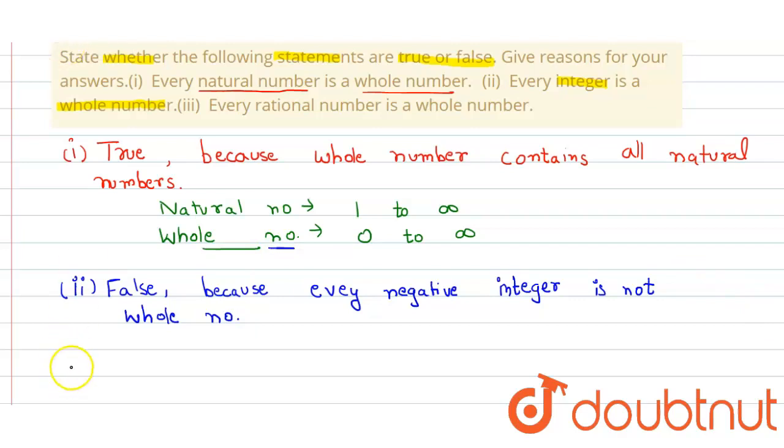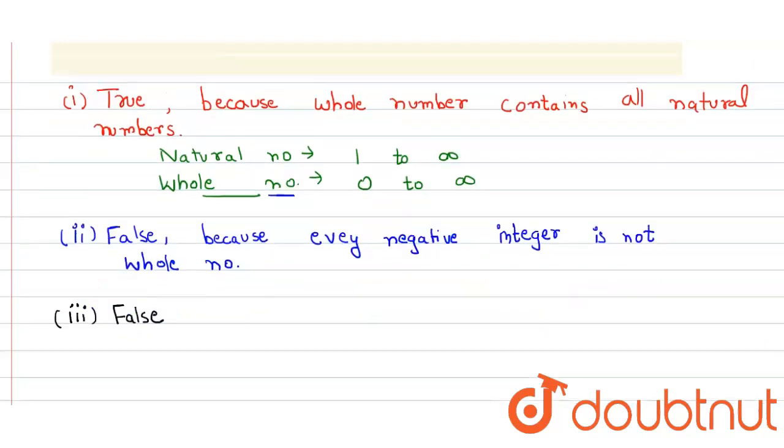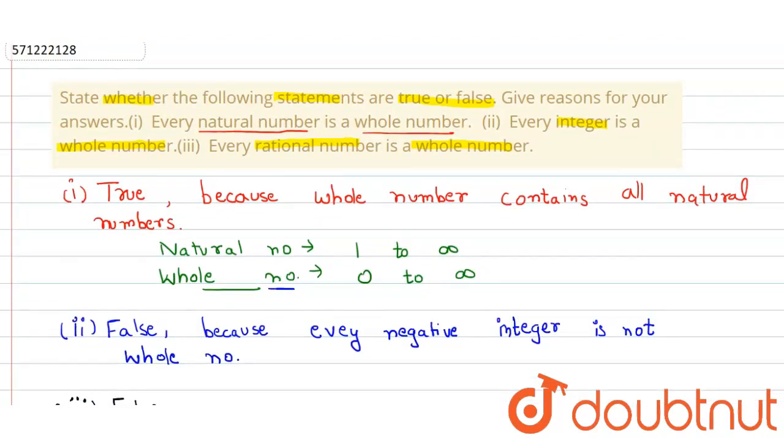So now in the third part: every rational number is a whole number. This statement is also false. Every rational number is not a whole number.